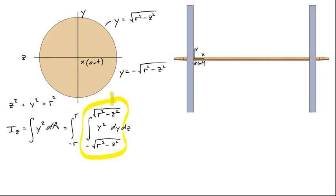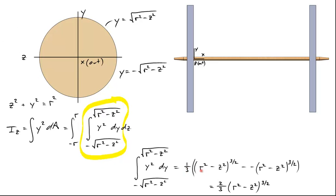Let's evaluate this inner integral first, which is equal to one third times r squared minus z squared to the three halves, minus a negative r squared minus z squared to the three halves. When simplified, that's equal to two thirds times r squared minus z squared to the three halves.